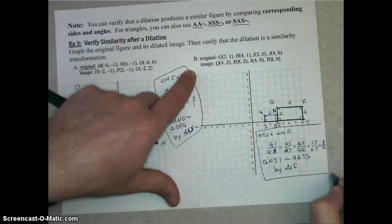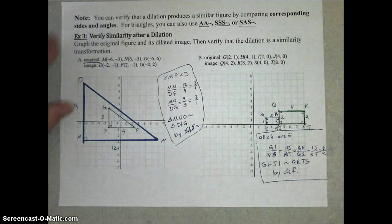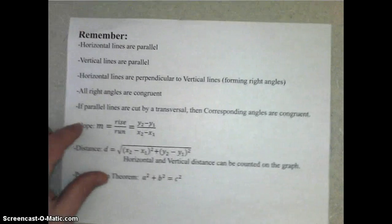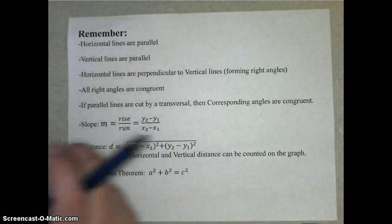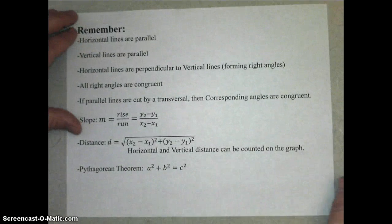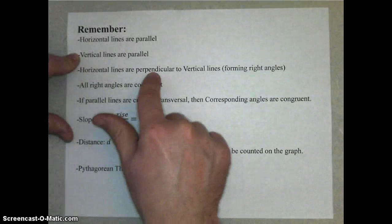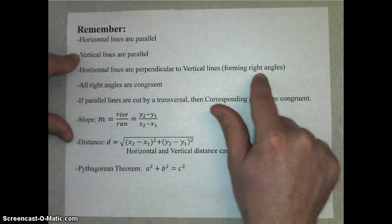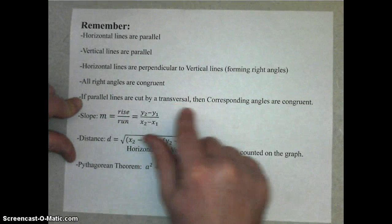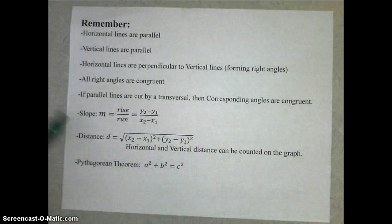That's how we verify the similarity of the transformation. A couple of things to remember when working with coordinate planes: horizontal lines are always parallel and have the same slope. Horizontal lines are perpendicular to vertical lines and form right angles, giving us congruent right angles. Also, if parallel lines are cut by a transversal, corresponding angles are going to be congruent.